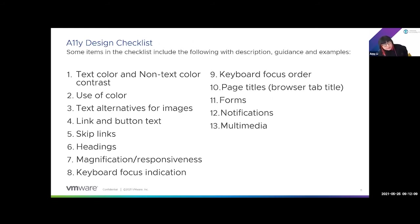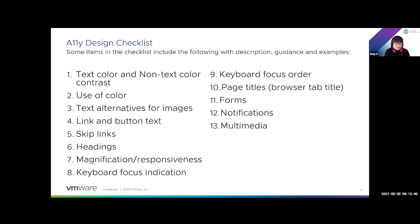On the screen here, I have 13 items — these are the actual checklist items we provide under each section. We provide a description, some guidance, and examples for each. The items are: text color and non-text color contrast, use of color, text alternative for images, link and button text, skip links, headings, magnification, responsiveness, keyboard focus indication, keyboard focus order, page title (also known as browser tab title), forms, notifications, and multimedia.